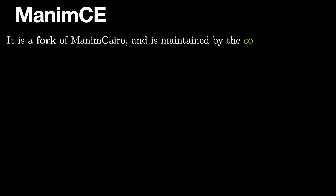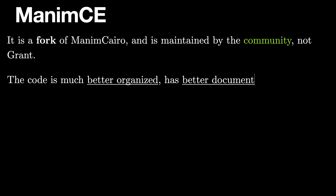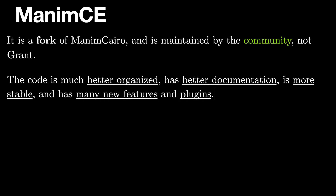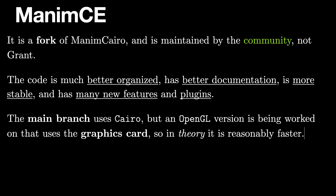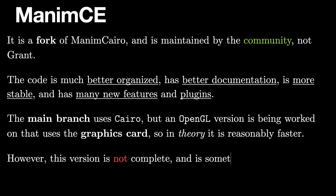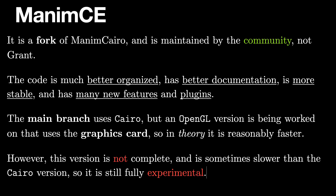Manim CE is a fork of Manim Cairo and is maintained by the community, not Grant. The code is much better organized, has better documentation, is more stable, and has many new features and plugins. The main branch uses Cairo, but an OpenGL version is being worked on that uses the graphics card, so in theory it is reasonably faster. However, this version is not complete and is sometimes slower than the Cairo version, so it is still fully experimental.